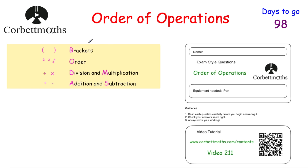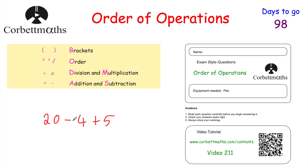So today we've gone through the order of operations: brackets, orders or indices, divisions and multiplications, additions and subtractions. One thing to point out — if you had a calculation like 20 subtract 4 plus 5, with no brackets, orders, divisions or multiplications, and you've just got additions and subtractions, you work from left to right. So 20 take away 4 is 16, then plus 5 is 21. You wouldn't do the addition before the subtraction.